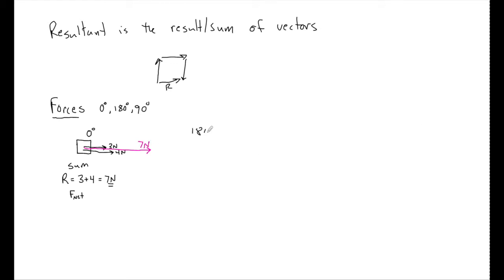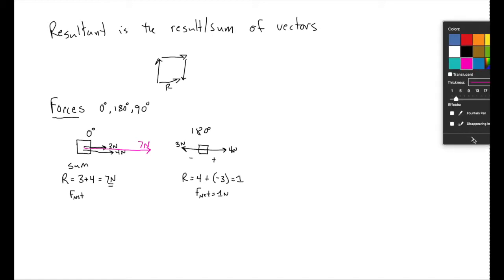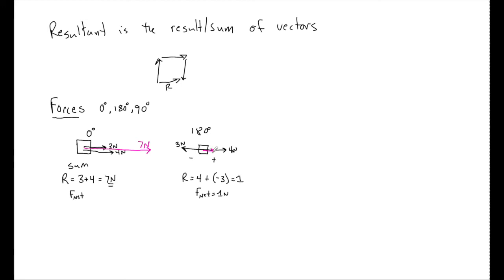At 180 degrees, now this is when they are pulling opposite to one another. If I have a 4 newton force pulling this way, and I have a 3 newton force pulling this way, I still say they're the sum, but these are opposite. So if I call to the right positive, that means to the left has to be negative. It's still the sum, but now because this is going the opposite way, it's really R equals 4 plus minus 3, which is going to be equal to 1. And this 1 is positive, so it's to the right. So F net here is going to be 1 newton to the right. If I was asked to draw this vector, it would look like this, 1 newton.